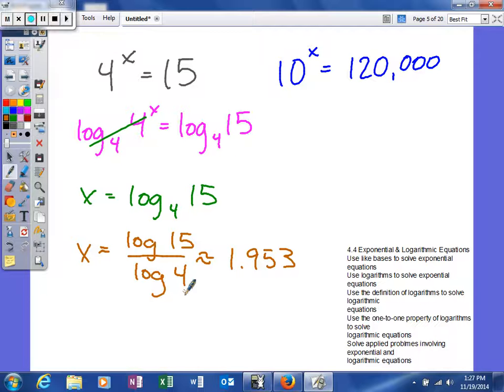And we'll look at another example. Now, again, same type issue where 10 to some power will be 120,000. So unfortunately it's not perfect, so we can't just look at it and tell. So this time I'm going to take the log of both sides. The reason I choose the log is because the base is 10.